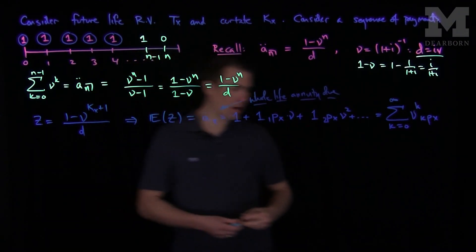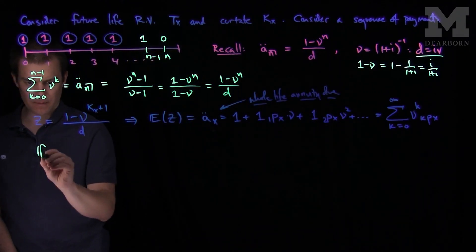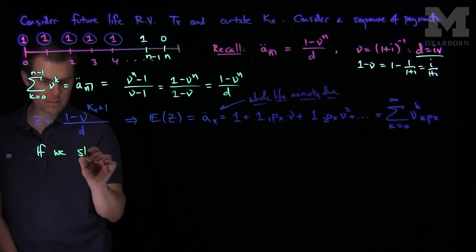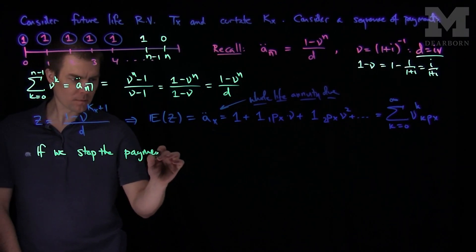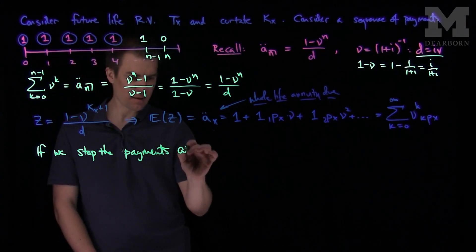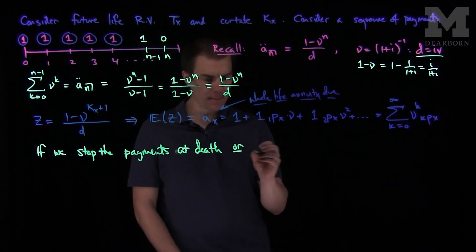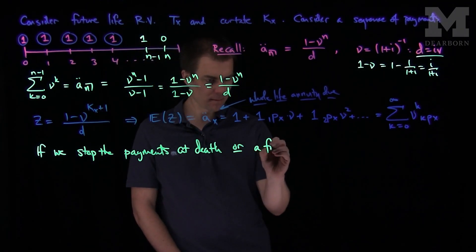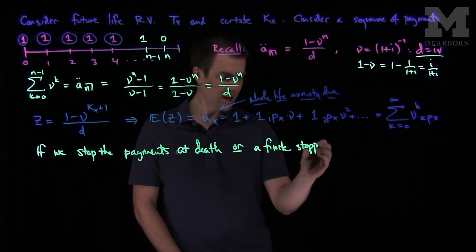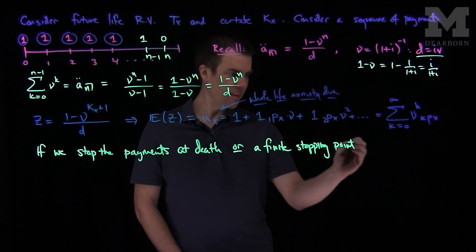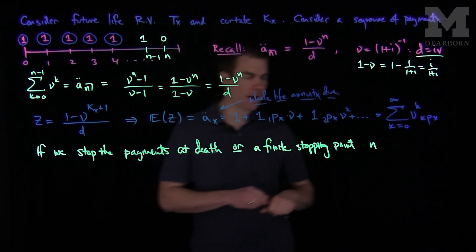Now we can cap off the payments. If we decide to cap the payments at death or a finite time stopping point, let's call that stopping point n. So the payments will stop at that point in time n. So now what we'll have is the following number line.